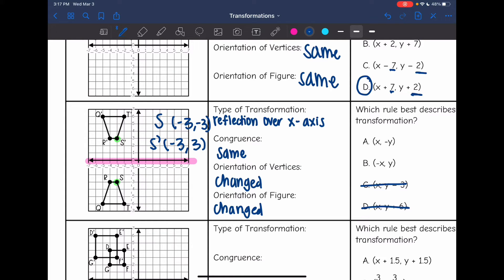So we can see that it is the y values that changed signs. So the answer to this one is A. That is the rule for a reflection over the x-axis.